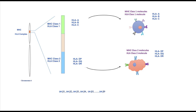In this section, we'll discuss about patterns of inheritance of HLA genes and diversity present in different aspects of the HLA system. We will also discuss about known HLA alleles and nomenclature of these alleles.